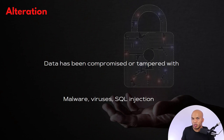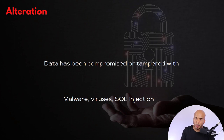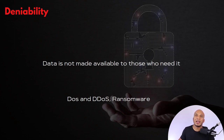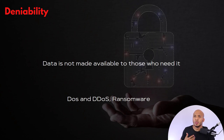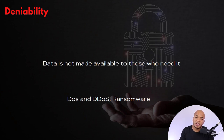Alteration is the direct opposite of integrity, where data will be compromised or tampered with. They can do so via malware, viruses, SQL injection, and so much more. And then deniability — the exact opposite of availability — where data and resources are not made available to those who need it. This can be achieved with DOS attacks (denial of service), distributed denial of service, and ransomware attacks.